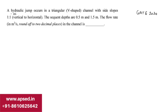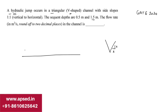The question says a hydraulic jump occurs in a triangular V-shaped channel with side slopes 1:1 (vertical to horizontal). Looking at the longitudinal section, we have a hydraulic jump taking place. The sequent depth before the jump is 0.5 m and after the jump is 1.5 m. The cross section is triangular.